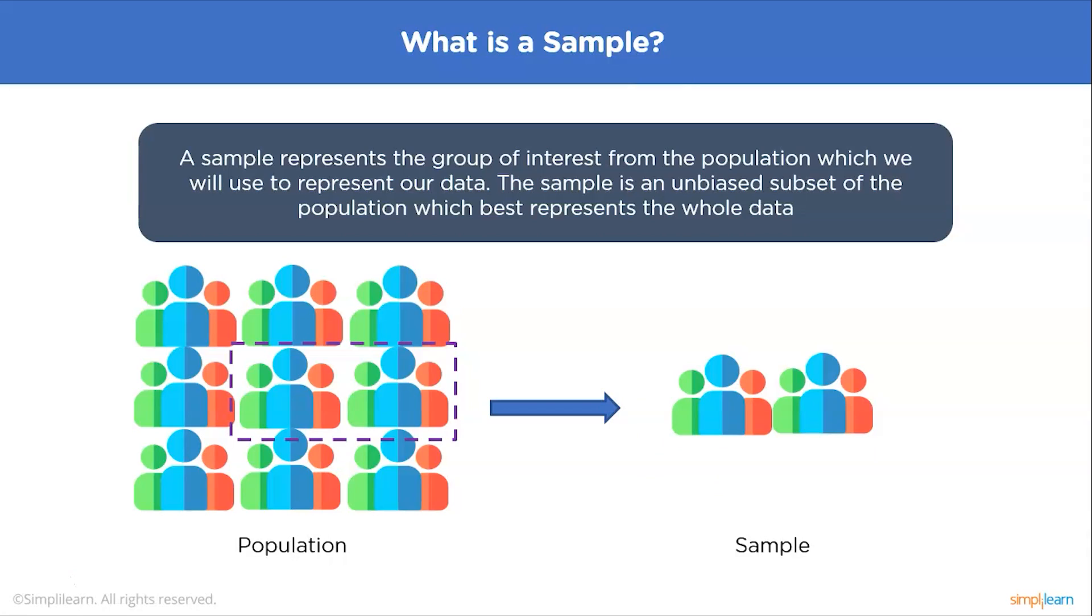Say you are testing the effects of a new fertilizer on crop yield. All the crop fields represent your population, whereas the 10 crop fields you tested correspond to your sample.